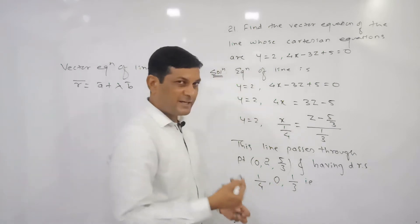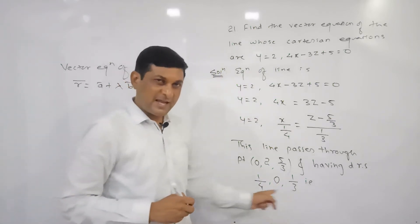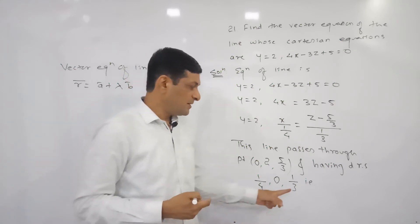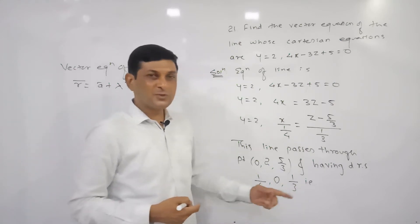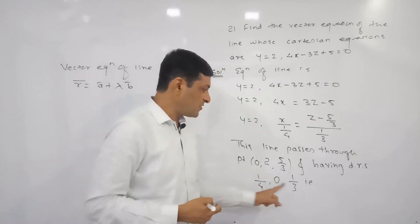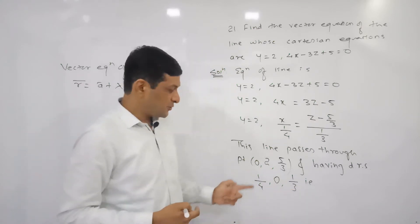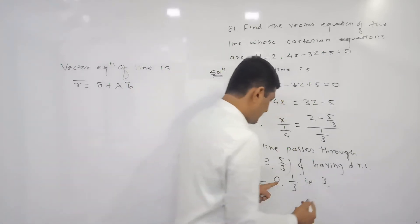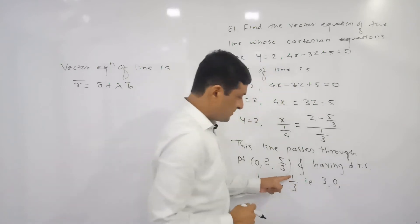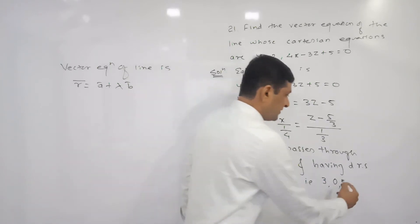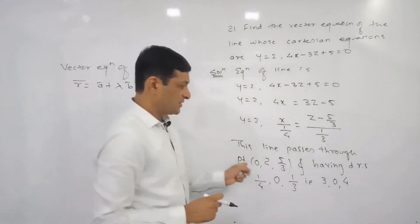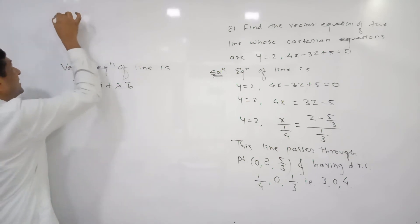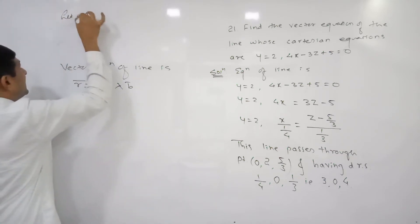Since the direction ratios are in fractions, we convert to simplest form by multiplying all terms by the LCM of the denominators. The LCM of 4 and 3 is 12. Multiplying by 12: 12/4 = 3, 12 × 0 = 0, and 12/3 = 4. So the simplified direction ratios are 3, 0, 4.